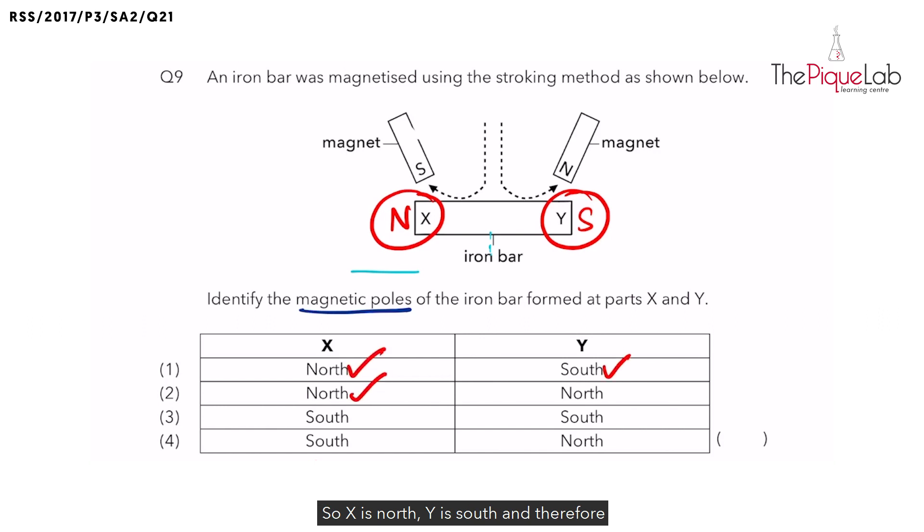So X is North, Y is South. And therefore, our answer is number one.